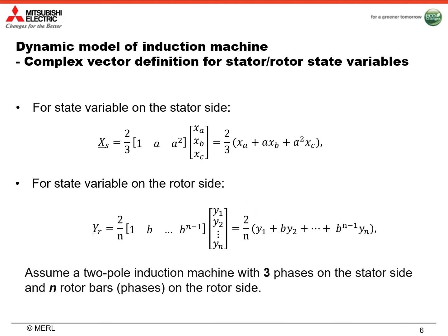Our proposed method is based on complex vector notation. For state variables on the stator side, we have xA, xB, and xC. We can use this transformation to convert to a complex vector yS. For state variables on the rotor side, we have y1 to yn. For the n rotor bars or n-phase rotor, we can use this equation to convert to a complex vector yR.